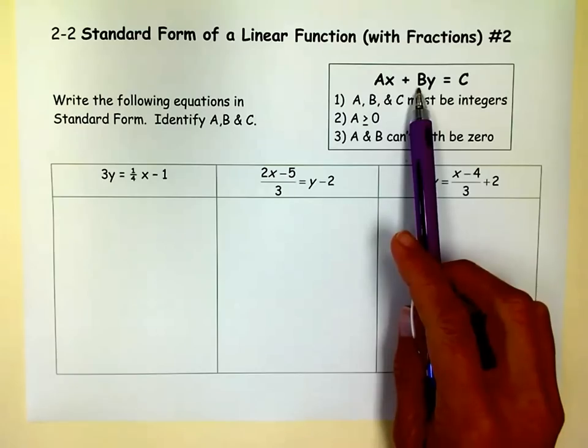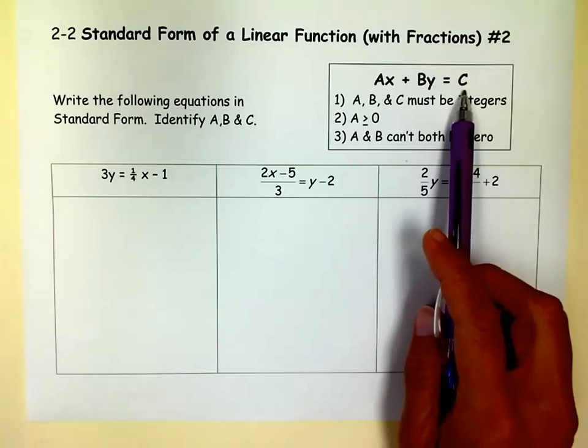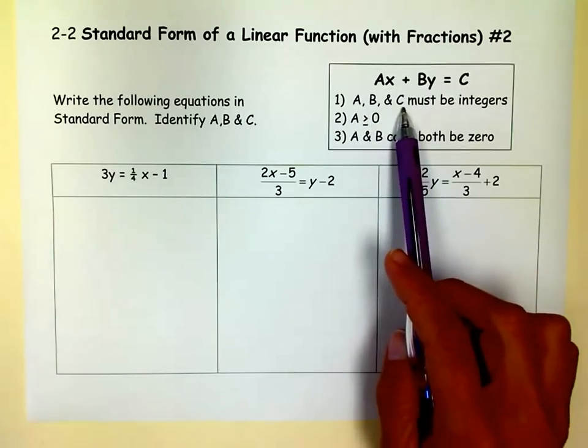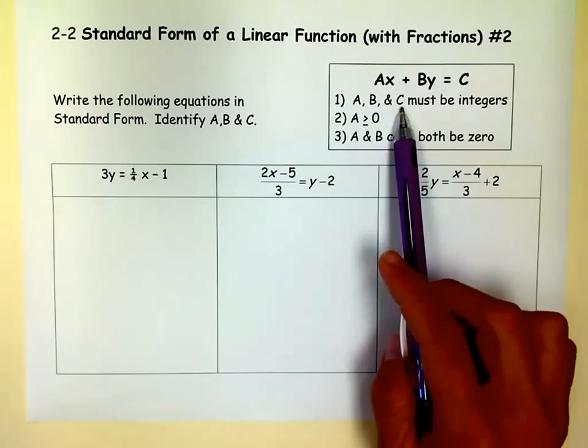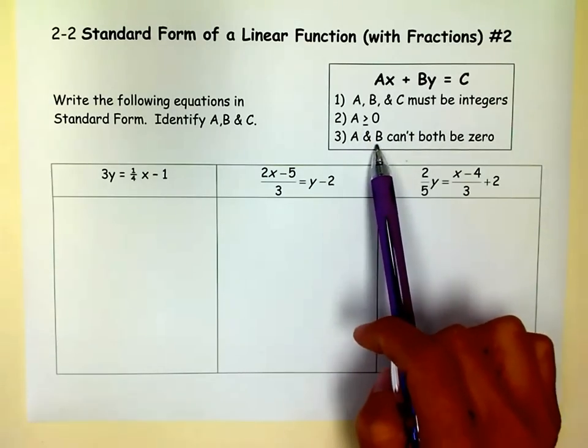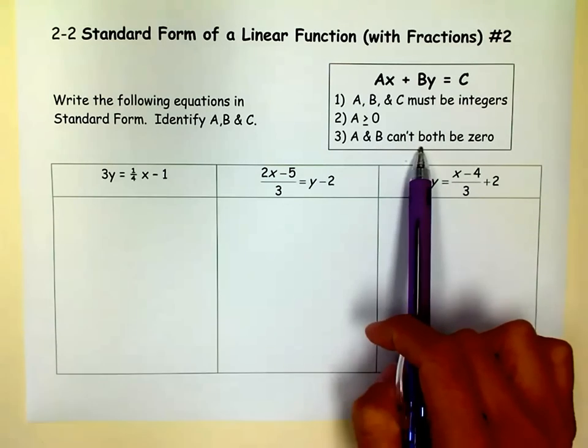A and B are coefficients, the numbers in front of the variable, C is a constant. To have an equation in standard form, a linear equation in standard form, A, B, and C must be integers, so you can't have decimals or fractions. A has to be positive, and A and B both can't be zero at the same time.